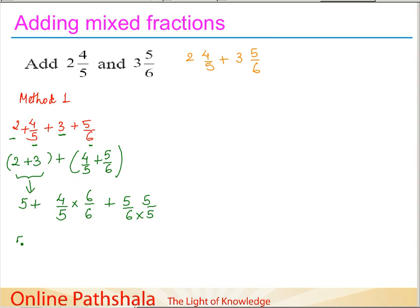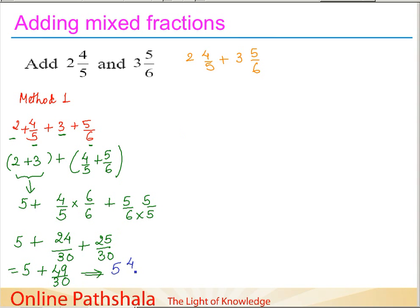Simplifying: 4 times 6 is 24, giving us 24/30; and 5 times 5 is 25, giving us 25/30. Adding these: 24 plus 25 is 49, so the fraction part is 49/30. Combined with the whole part of 5, the answer is 5 and 49/30. That completes Method 1.